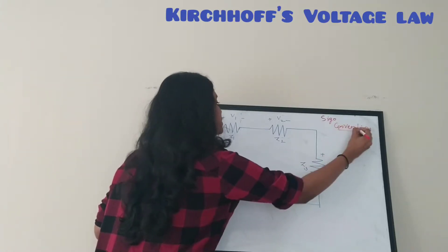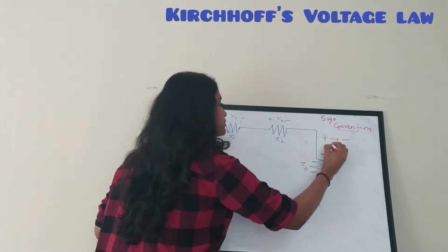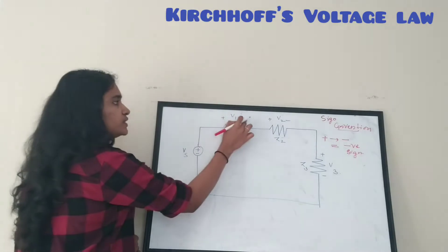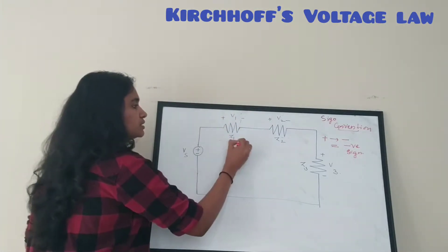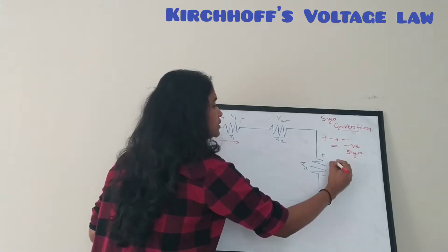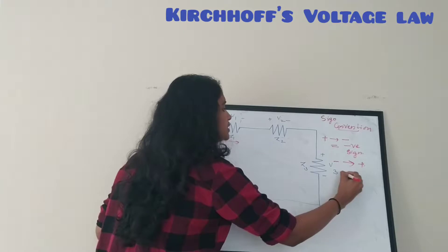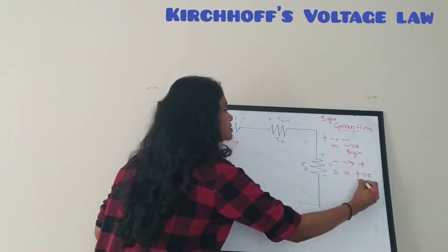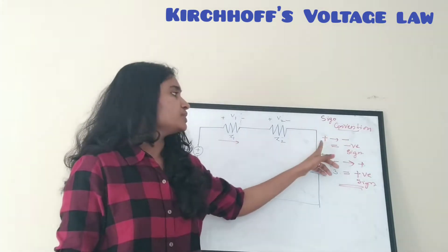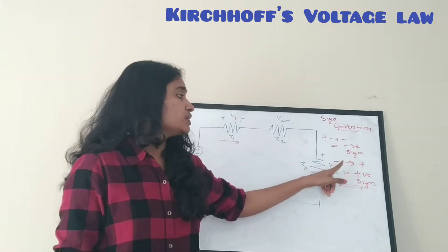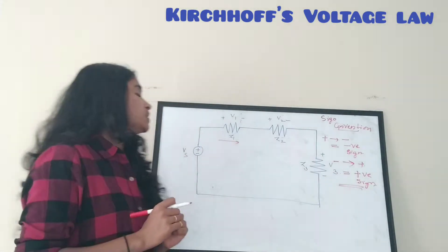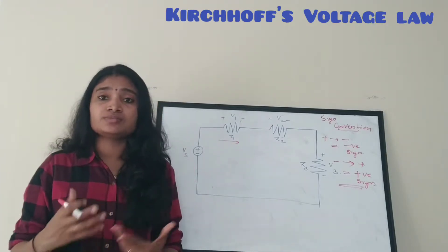The sign convention is: if you are going from positive to negative, the sign is negative. If you are going from negative to positive, the sign is positive. You must follow this sign convention correctly in order to take the algebraic sum correctly.